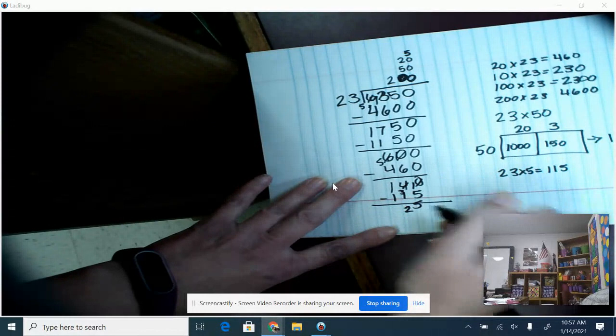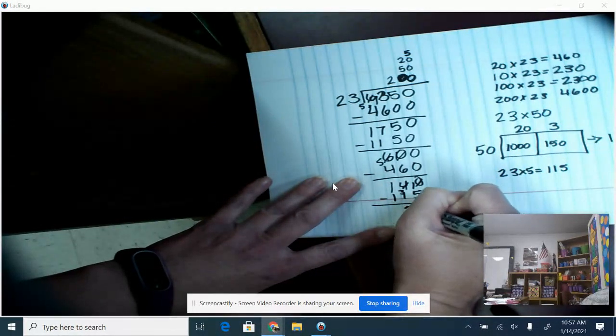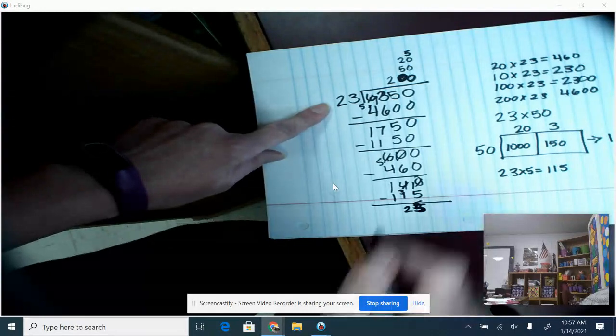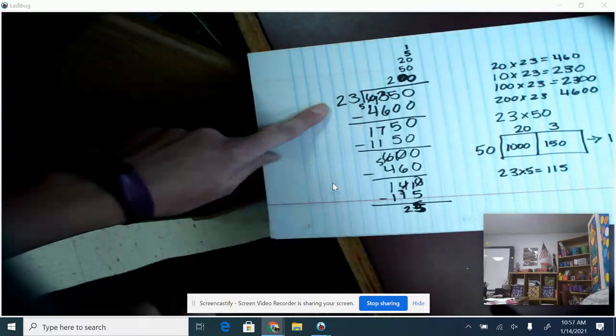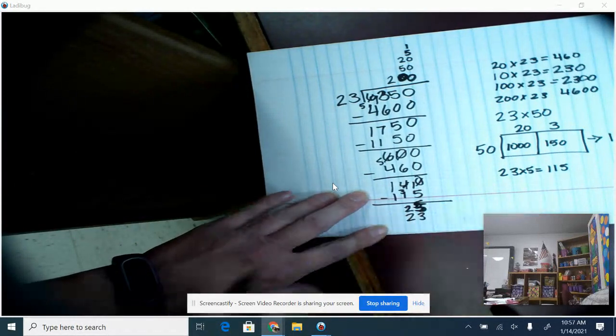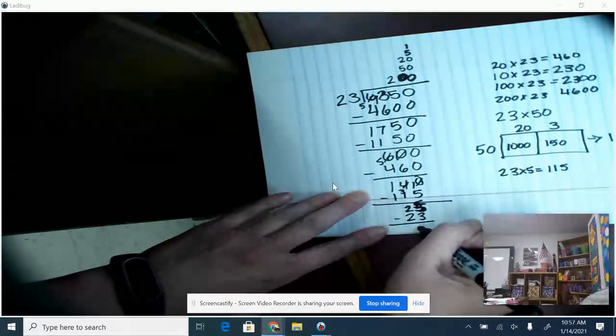And now I have 25 left. So I can see I can make one more group of 23. I'm going to put a 1 here. 1 times 23 is 23. Then I subtract, and I have 2 left over.